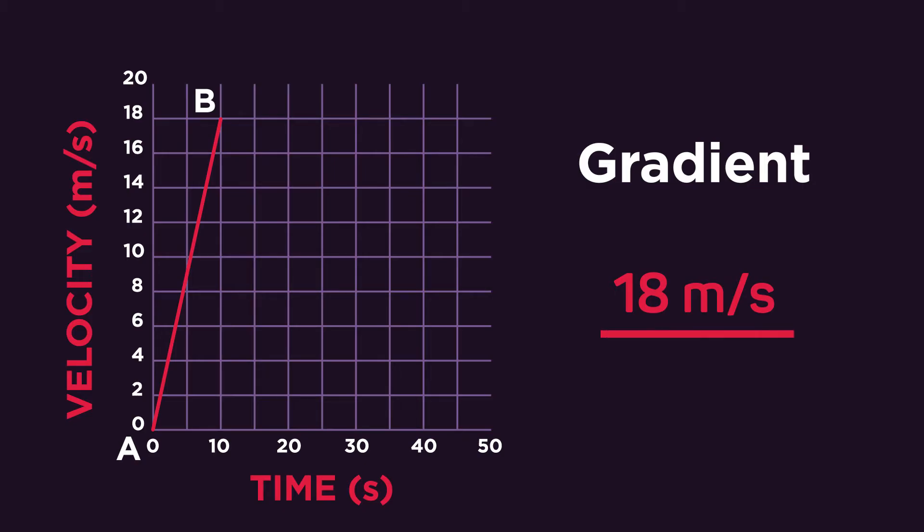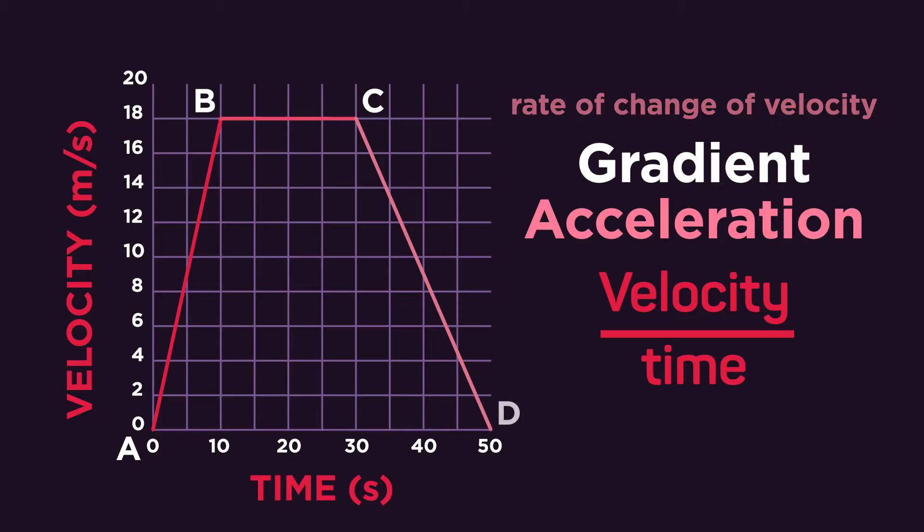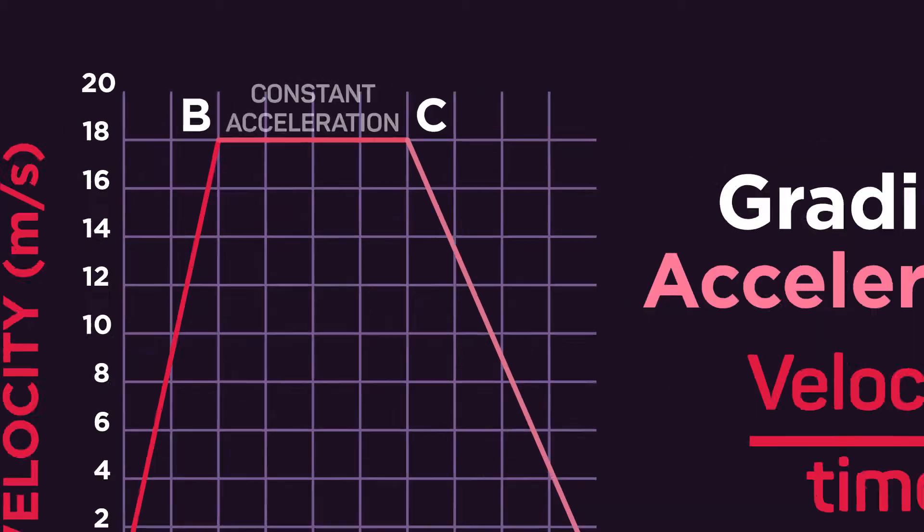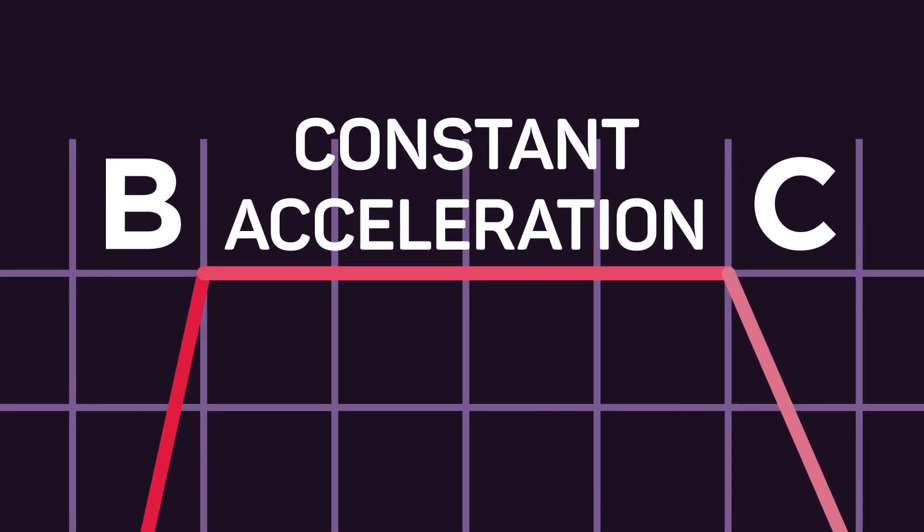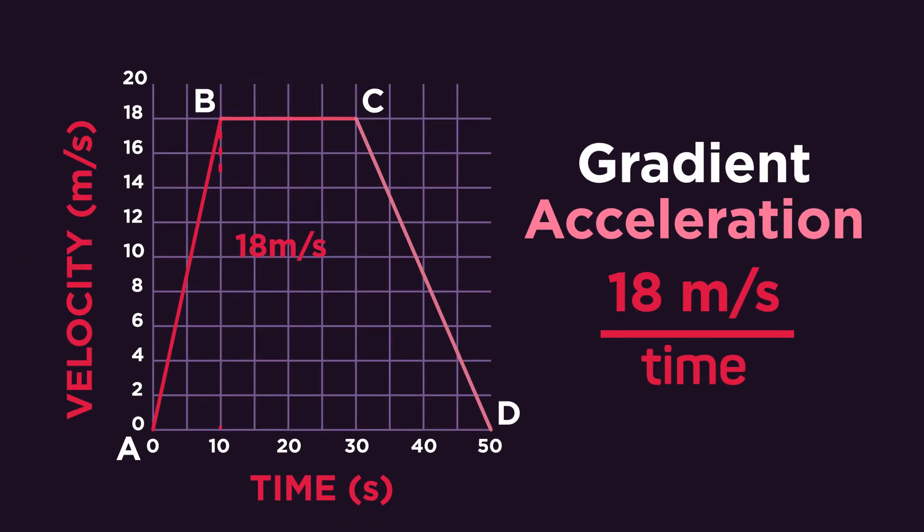This is divided by the time taken to change. Velocity divided by time is the rate of change of velocity of the object, which is called acceleration. We can find the acceleration of an object at any point on a velocity-time graph by finding the gradient at that point.